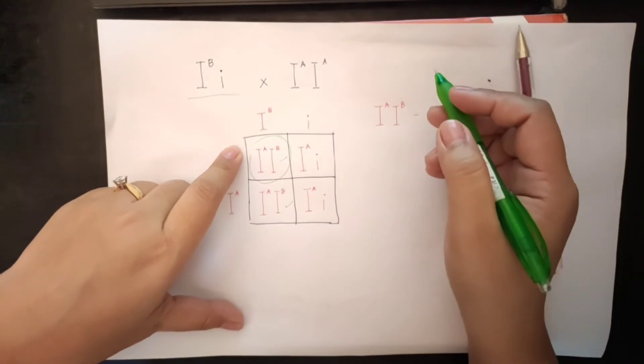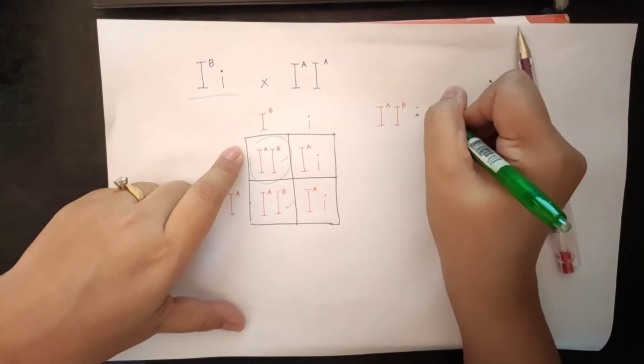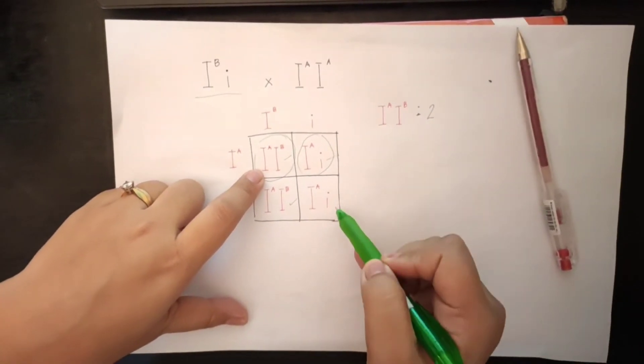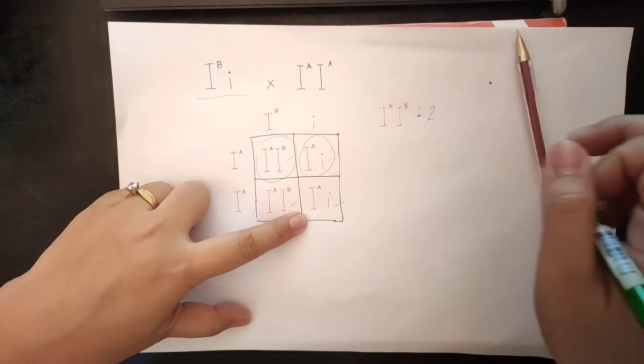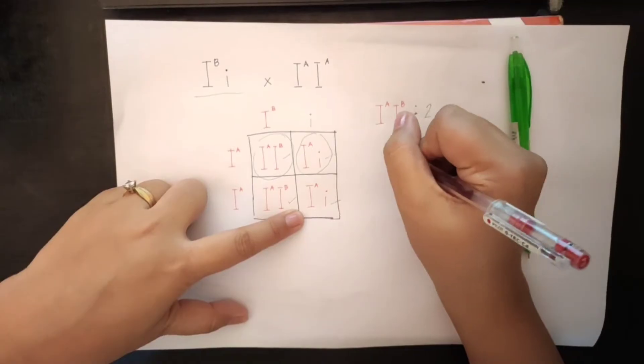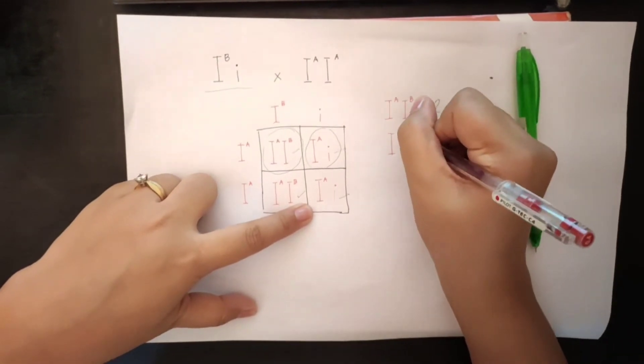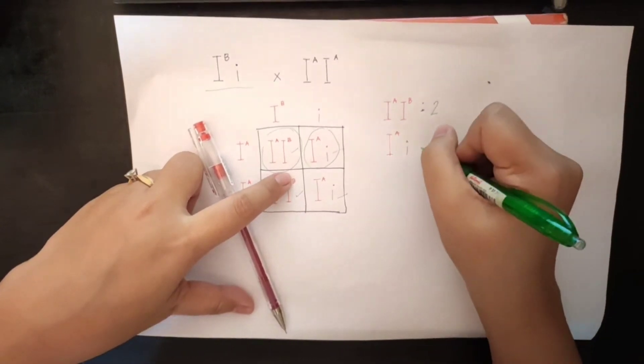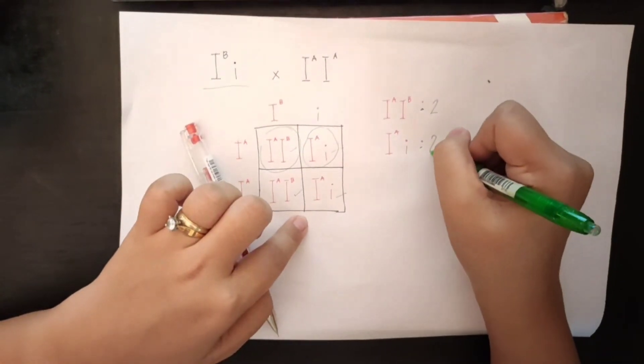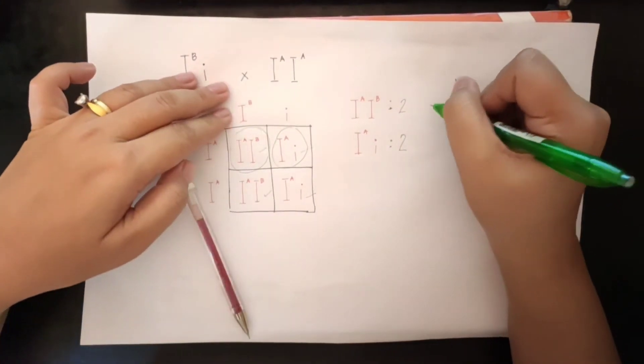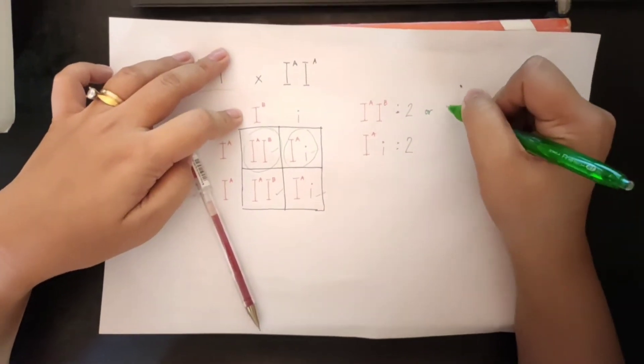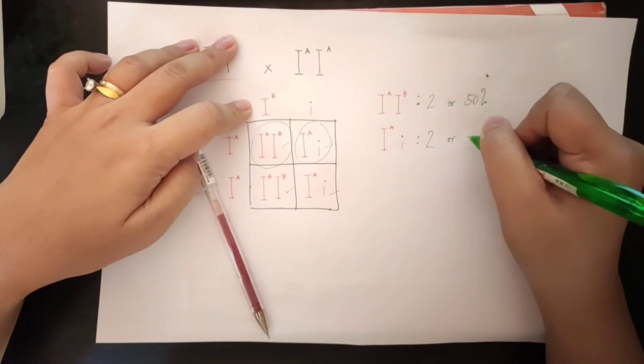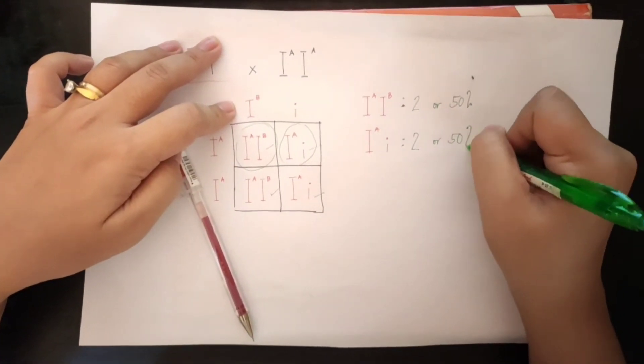So, therefore, the ratio is 2. Okay, and then the next one, this one, the same thing with the other square. So, we are going to write the genotype A and small i. And that is the ratio of 2. In percentage, we are going to write in percentage, this is 50% or 50%.